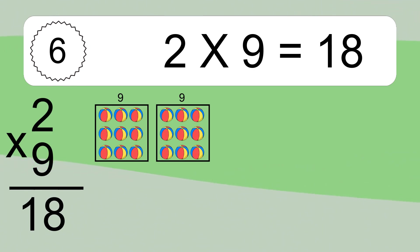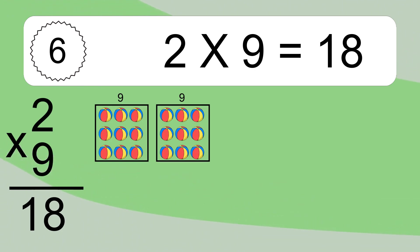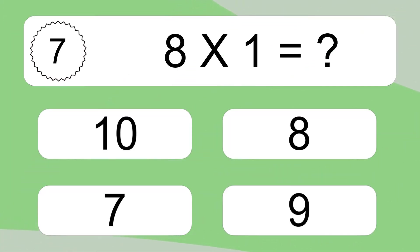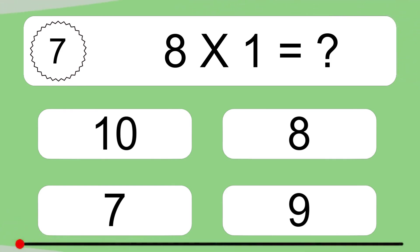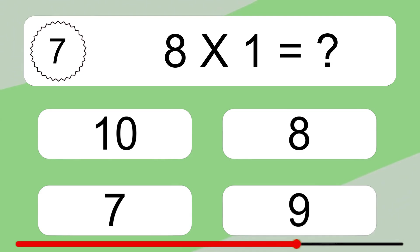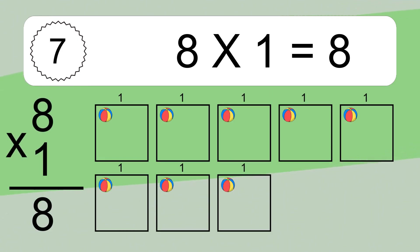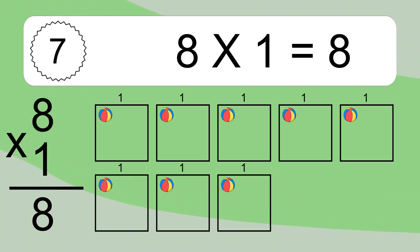We have two boxes, and each box has nine colorful balls inside. If you count all the balls in all the boxes together, you will have two times nine balls. This equals eighteen balls.